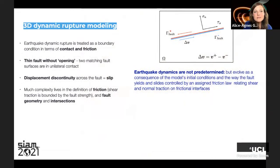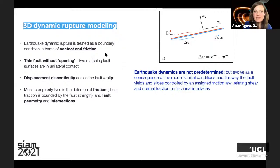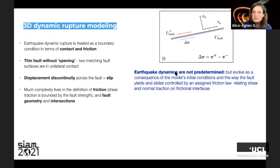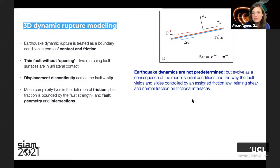Earthquake dynamic rupture is implemented as a source in wave propagation solvers — typically as a boundary condition in terms of contact and friction, or by splitting nodes hosting the fault into two sides that can move independently. For a strike-slip fault, one side moves inside the fault plane, the other outside. Importantly, the dynamics during this process are not predetermined; they evolve as a consequence of initial conditions in terms of loading and frictional resistance.